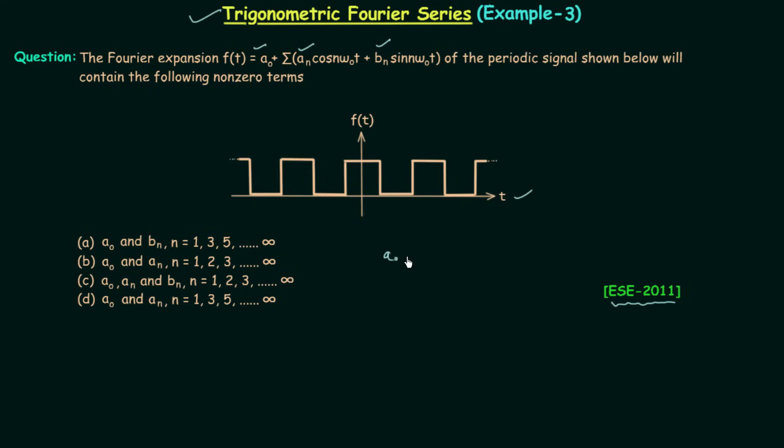So a0 is the average value of signal ft and as the signal is not symmetrical about the time axis, it is not equal to 0 and as the question is asking about nonzero terms, the correct option must contain a0. As you can see all four options are having a0, the calculation of a0 is not very useful in determining the correct option.